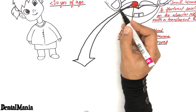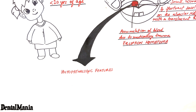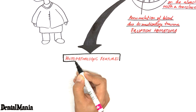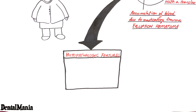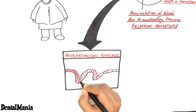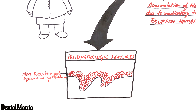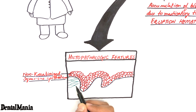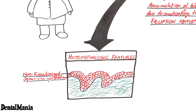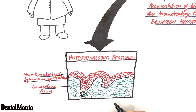The histopathologic features of eruption cyst are similar to the dentigerous cyst. The cyst exhibits a thin lining of non-keratinized squamous epithelium. Beneath the epithelium lies the layer of lamina propria or connective tissue, which shows a variable inflammatory cell infiltrate.